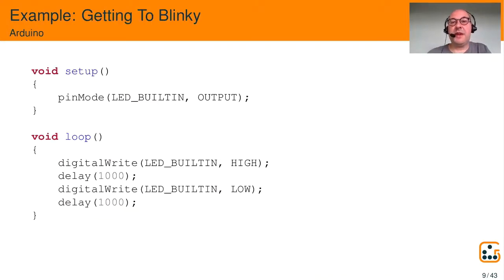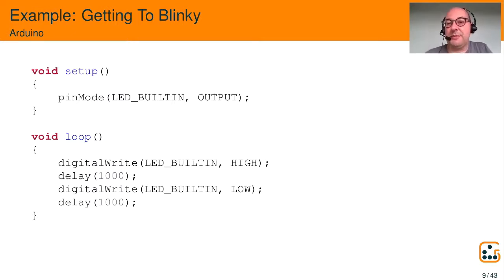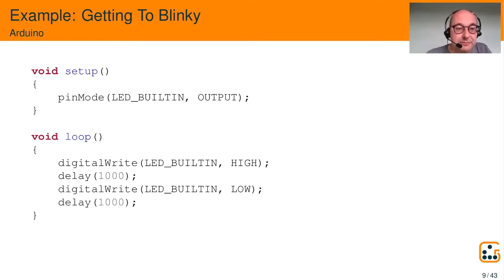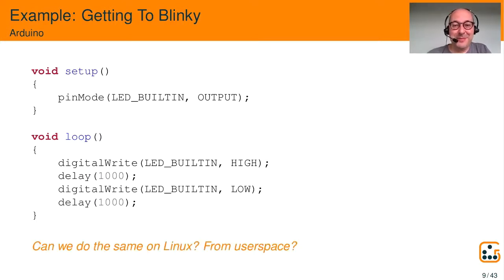Let's look at a simple example. Suppose you have an LED on your Arduino connected to pin 13, the built-in LED, and you want to blink it. On Arduino you first configure the pin as output in the setup function, then have a loop that enables the LED, waits a bit, disables the LED, waits a bit, and so on forever. Very simple — probably the first program everybody writes on an Arduino. Now the question is: can we do the same on Linux from user space?